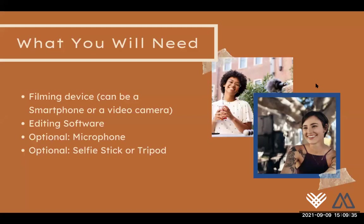Once you've written down everything you want to convey in your video and identified your key points, you want to get together everything you'll actually need to film your video — and it's actually not a lot. You're going to need some sort of filming device, which can be a smartphone or a video camera. You're going to need editing software. Some optional things you may need are a microphone — which can depend on whether you're doing voiceover or interviewing someone — and a selfie stick or tripod somewhere you can place a camera if you're planning on interviewing someone or filming yourself.